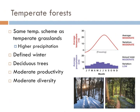Temperate forests of North America include the Appalachian Mountains from South Carolina to Maine and the Rocky Mountains. These environments have a temperature scheme very similar to grasslands, but with significantly higher precipitation. They also typically have a defined winter with snow activities, and compared with other ecosystems, they have moderate productivity in terms of biomass, moderate biodiversity, and are predominated by deciduous trees. They're like the Goldilocks biome, and they sure are pretty in the autumn.